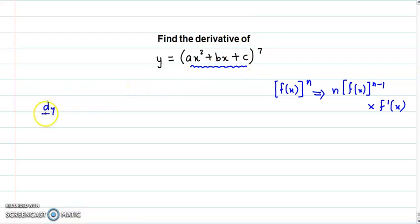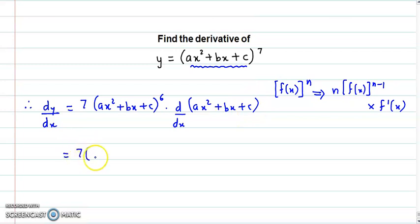We get dy/dx is equal to, n here is 7, so 7 times f(x), that is ax² + bx + c raised to n minus 1, 7 minus 1 is 6, times the derivative of f(x), that is the derivative of (ax² + bx + c)⁶.